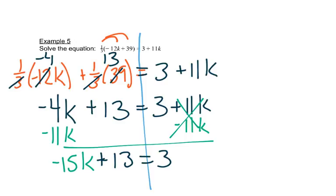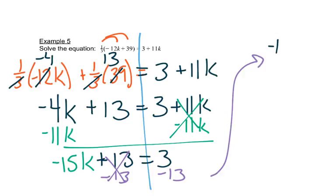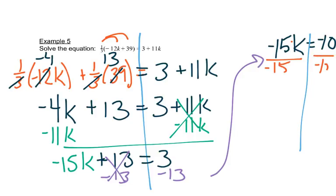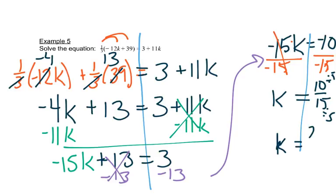I want to move that number away from the k. It's plus 13, so subtract 13 from both sides. Now I have negative 15k equals negative 10. We need to divide by whatever number is in front since that's really a multiplication, so I'll divide both sides by negative 15. That gives me k equals... if you do negative 10 divided by negative 15 you get a long decimal, so instead think of it as a fraction. Negative divided by negative makes it positive, so we have positive 10 over 15. We can reduce that by dividing top and bottom by 5, giving k equals 2/3.